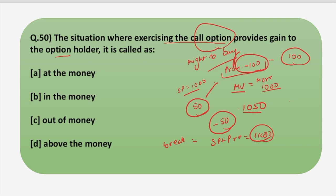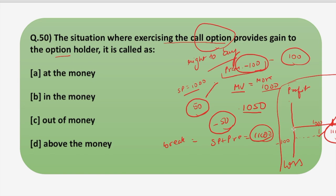If you want to understand this through a diagram: the profit part is shown above, the loss part below, and the x-axis is the market price of the underlying asset. 100 is the premium, 1000 is the strike price, and this is the net payoff on the call. The breakeven point is at 1100. This diagram is basically the payoff on the call option to the option holder. Similarly, you can find it for a payoff on call option to the option writer. You can similarly analyze it for the put option — understanding one part will make you easily understand the other three parts as well.